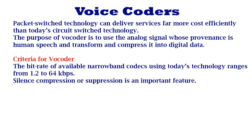During a conversation, a speaker talks an average of 35% of the time. Therefore, silence compression or suppression is an important feature. In a point-to-point conversation, this feature saves approximately half of the bandwidth. The savings are even greater in a decentralized multicast where packets are efficiently destined to multiple nodes on the network.